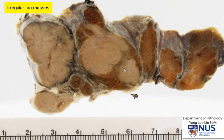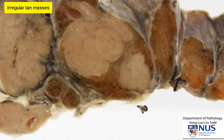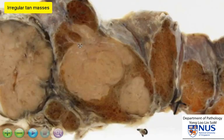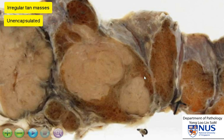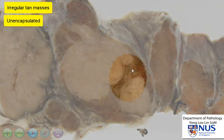These are pale and tan in color, and they are clearly not encapsulated. In some areas, they are fairly well demarcated from the thyroid parenchyma, but in other areas, the distinction is not as sharp.